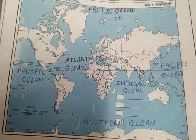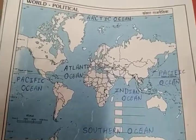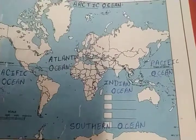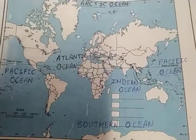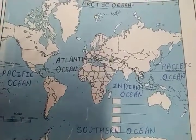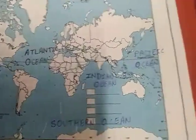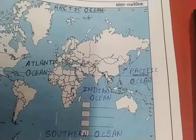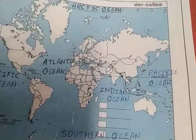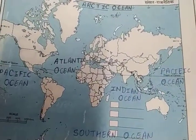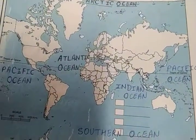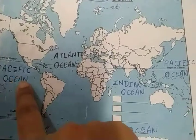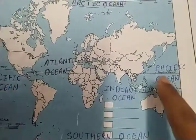So students, this is Part 2 and in this we are going to discuss about all the oceans on the map and on the globe as well. I have already taught you about the first biggest ocean, the Pacific Ocean. I have already explained the Pacific Ocean.